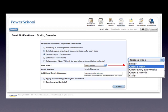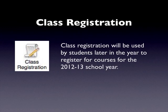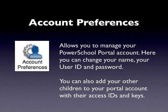You can apply these settings to all of your children or just to select children in your family. The School Bulletin icon will display daily school announcements. The Class Registration icon is for student use and will be used later in the year for students to register for courses in the 2012–2013 school year. Clicking the Account Preferences icon allows you to manage all aspects of your PowerSchool Portal account — here you can change your name, your ID, and password.